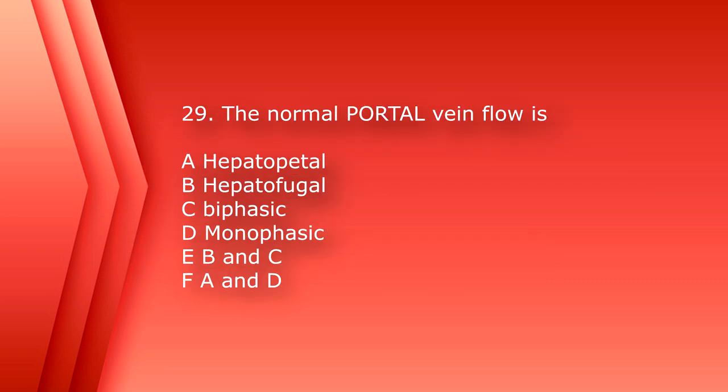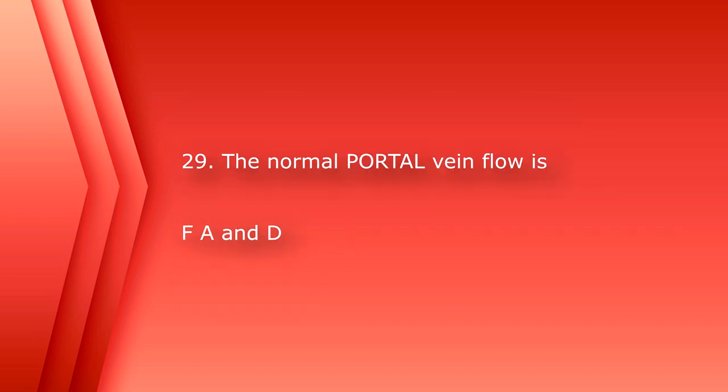Number 29: the normal portal vein flow is A. Hepatopetal, B. Hepatofugal, C. Biphasic, D. Monophasic, E. B and C, or F. A and D. The answer is F, A and D — hepatopetal, or towards the liver, and monophasic.